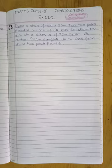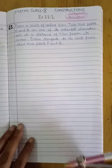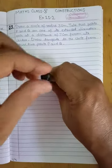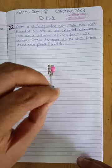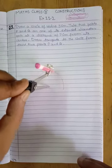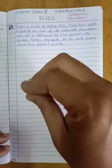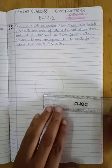So first of all, we draw a circle of radius 3 centimeter in the middle of the page like this. So this is the circle of radius 3 centimeter.